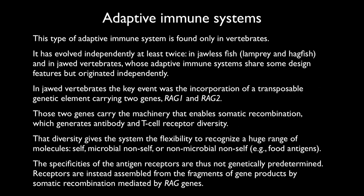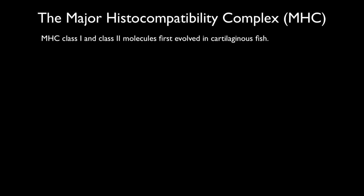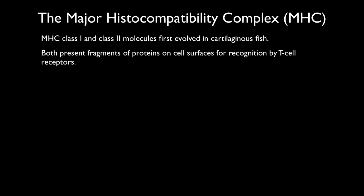The specificities of the antigen receptors are not genetically predetermined. The receptors are assembled from fragments of gene products by somatic recombination mediated by RAG genes. The major histocompatibility complex produces molecules of two types, class I and class II, which first evolved in cartilaginous fish. Both present fragments of proteins on cell surfaces for recognition by T-cell receptors, so they are part of the presentation mechanism.